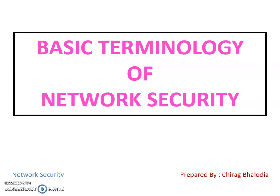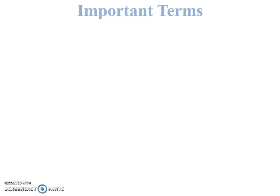Hello friends, myself Chirag. Today I'm going to discuss basic terminology of network security. Before learning any kind of security, first of all we have to learn data security. Data security means protecting data from unauthorized users.